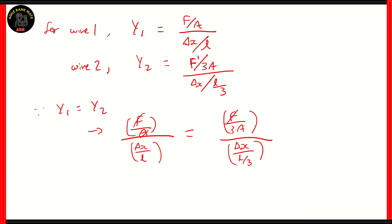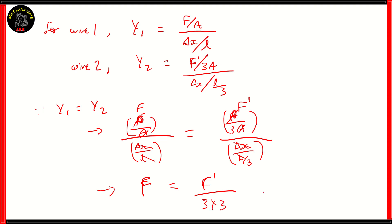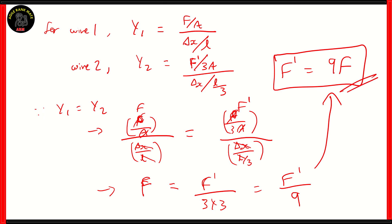The forces do not cancel out here because they are different — we need to find the force on wire 2. Cancelling the A's, delta x's, and L's, the numerator on the left is F and the denominator is 1. On the right, the numerator is f dash and the denominator becomes 3 times 3, which means the right-hand side is f dash over 9. Therefore f dash, the new force, has to be equal to 9 times the original force used on wire 1. So you need to apply 9 times the force applied on wire 1 to achieve the same change in length in wire 2.